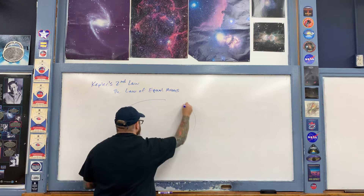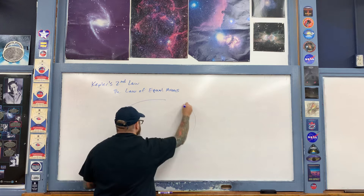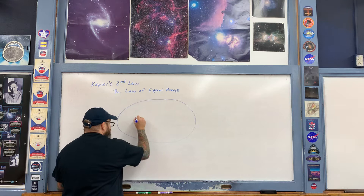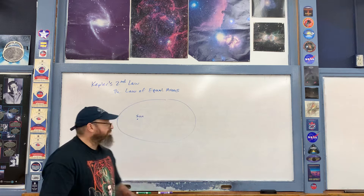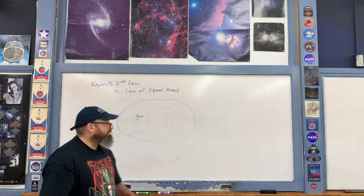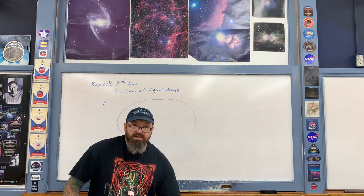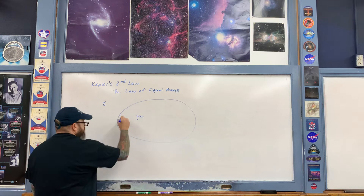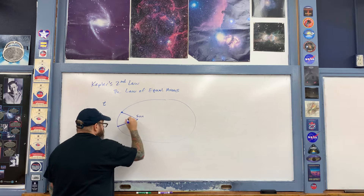Here is an elliptical orbit of a planet — I'm greatly exaggerating its eccentricity. Here is the sun at one focus of the ellipse. When the planet is near perihelion, near closest approach, over some time interval T it's moving faster, and in that time the planet sweeps out an area on the ellipse.